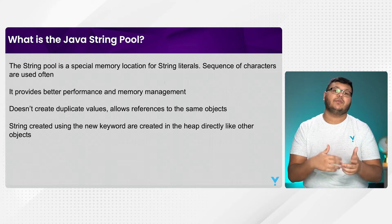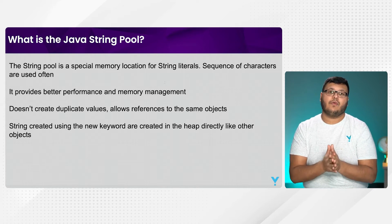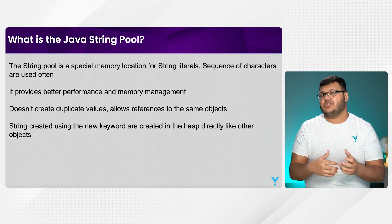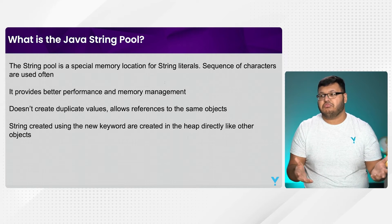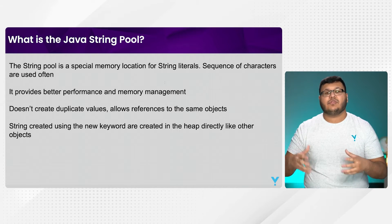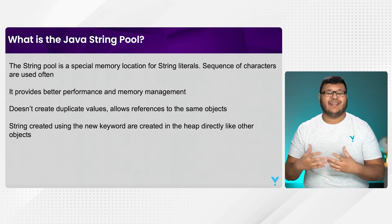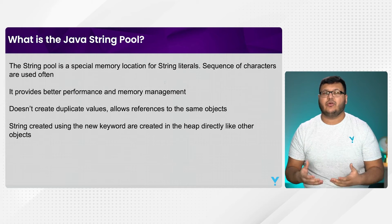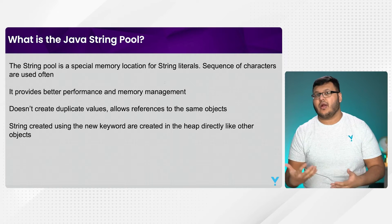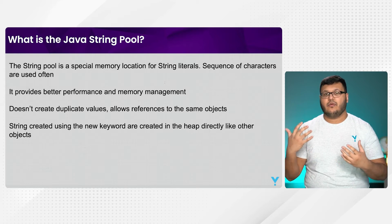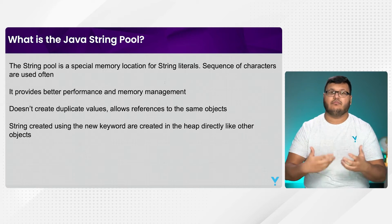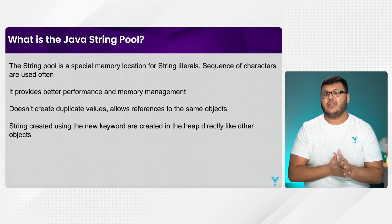String types in Java are how we represent character sequences, so just any sequence of characters. A sequence of characters — just text in general — is something we will need to represent all the time. It's one of the commonly used kinds of data information. It's how we share information as text.